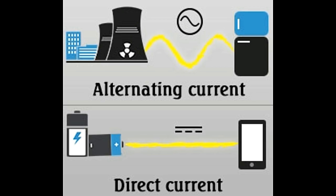Buzzel will explain the difference between the two forms of current: alternating current and direct current.